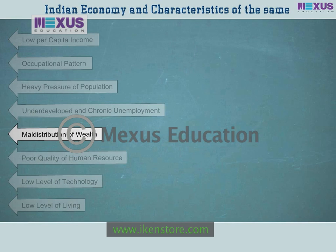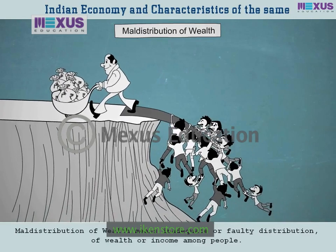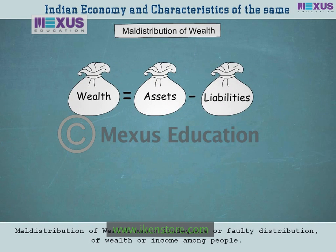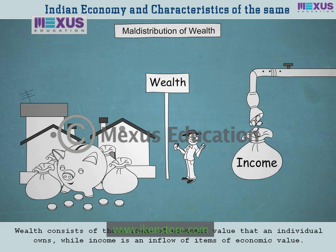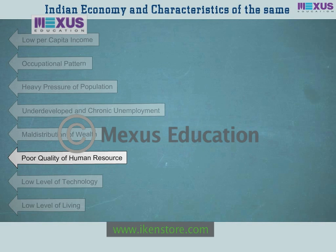Mal-distribution of wealth means inadequate or faulty distribution of wealth or income among people. Wealth is a person's net worth, expressed as: Wealth equals assets minus liabilities. The word wealth is often confused with income. Wealth consists of those items of economic value that an individual owns, while income is an inflow of items of economic value.